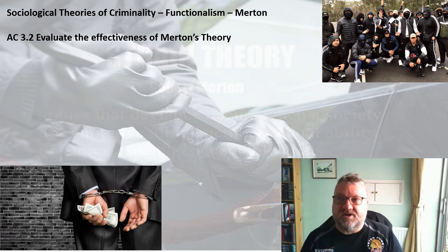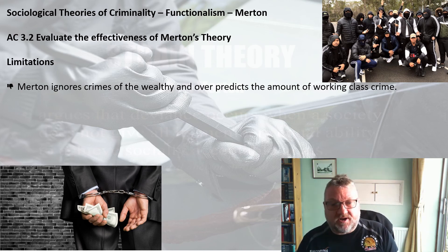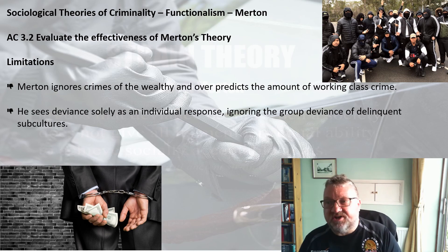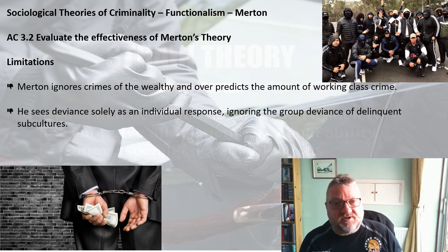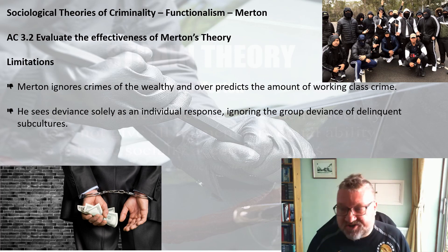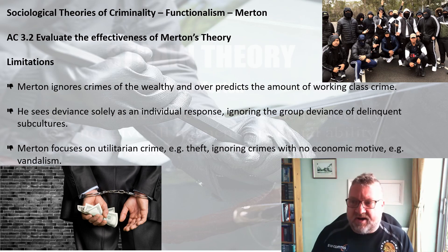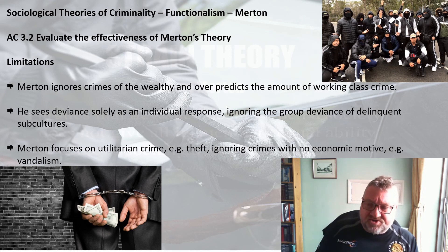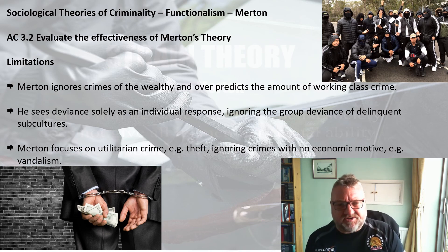Looking at the limitations of Merton's theory: we can argue that Merton ignores the crimes of the wealthy and over-predicts the amount of working class crime — that's a clear weakness. He also sees deviance solely as an individual response, which completely ignores group deviants, particularly delinquent subcultures and gangs. Finally, Merton focuses on utilitarian crime — crime that's really about gaining money, such as theft — and ignores crime with no economic motive, such as vandalism, not explaining how such crimes link into his theory at all.